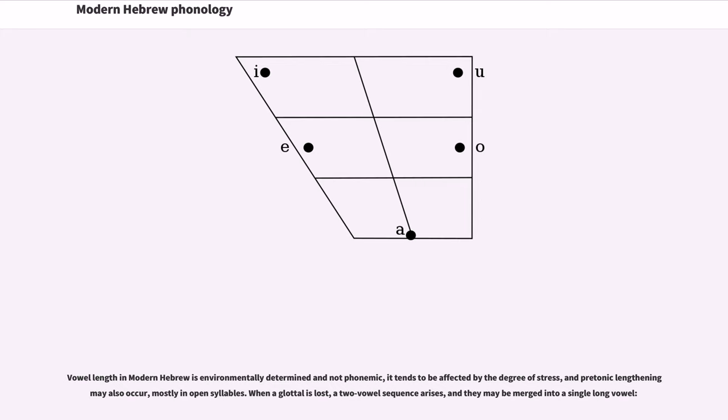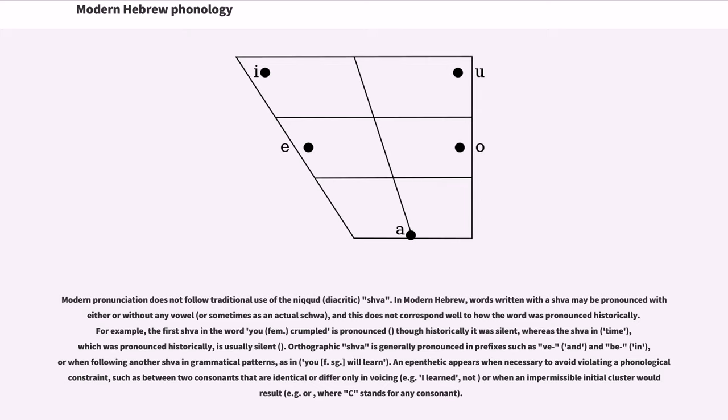When a glottal is lost, a two-vowel sequence arises, and they may be merged into a single long vowel. Modern pronunciation does not follow traditional use of the nikkud diacritic schwa. In modern Hebrew, words written with a schwa may be pronounced with either e or without any vowel, or sometimes as an actual schwa, and this does not correspond well to how the word was pronounced historically.